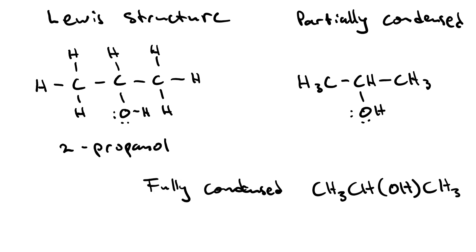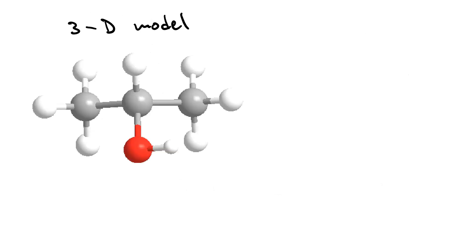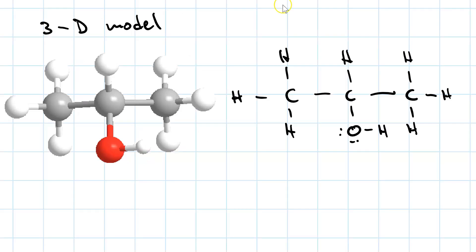None of these is my favorite. What I prefer is called a bond line structure. Here I've got a 3D model of 2-propanol. If we're looking at it from this angle, it looks a lot like a Lewis structure. The gray spheres represent carbon atoms, the red sphere represents an oxygen, and then the white spheres represent hydrogens.